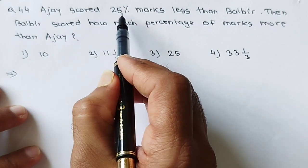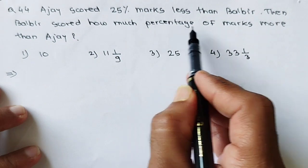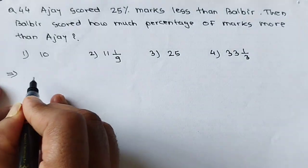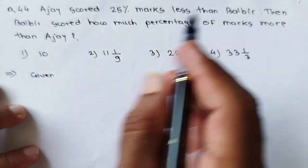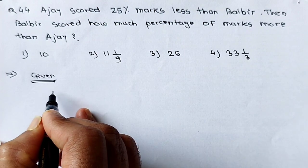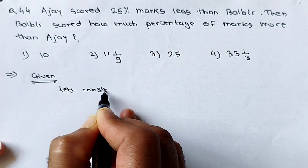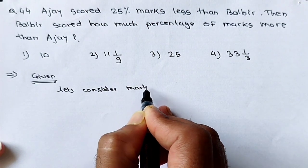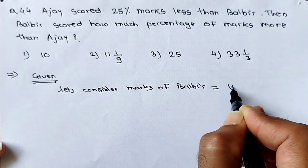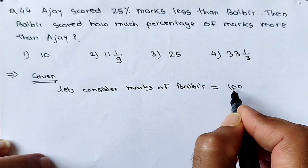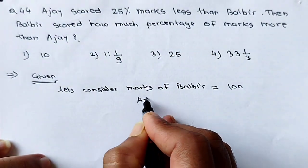See question number 44. Ajay scored 25% marks less than Bulbier. Then Bulbier scored how much percentage of marks more than Ajay? What is given is the percentage marks of Ajay which are less than Bulbier. For our convenience, let's consider Bulbier's marks as 100, because it becomes easy. If Bulbier has 100 marks, then Ajay will have 25% less, meaning Ajay's marks will be 75.